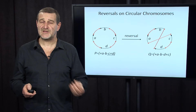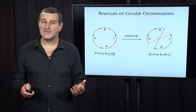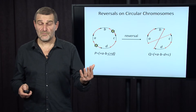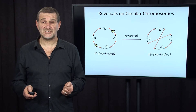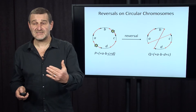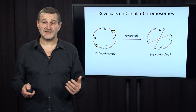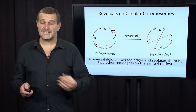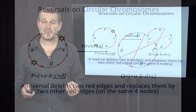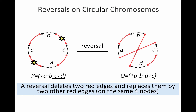To summarize what this transformation does: it removes these two red edges and adds two new red edges. So a reversal now has a geometric interpretation — it deletes two red edges and replaces them with two other red edges on the same four nodes.